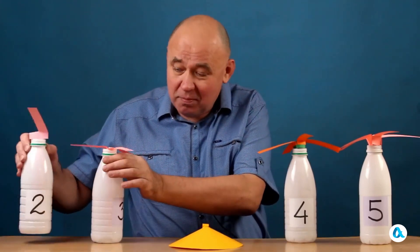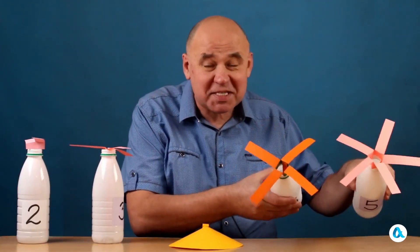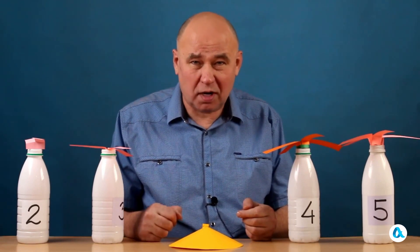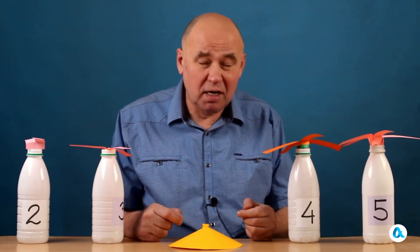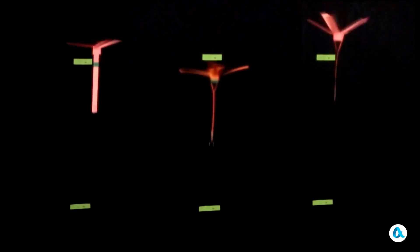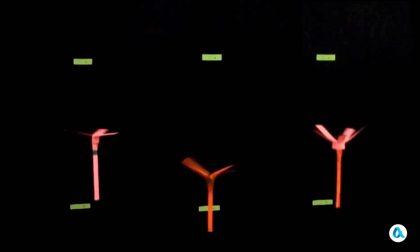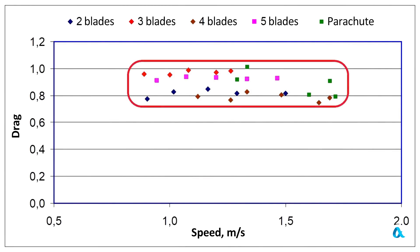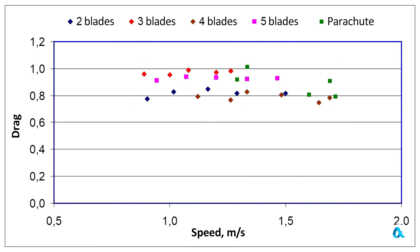To verify this, we made helicopters with 2, 3, 4, and 5 blades. We loaded them with various weights, released them, and carefully observed the drag coefficient for each design at various descent speeds. We see that the drag coefficient for all helicopters, just like for the solid parachute, turned out to be practically the same. All experimental points lie within the range of approximately 0.8 to 1.1, and their variation is more related to manufacturing and testing errors.